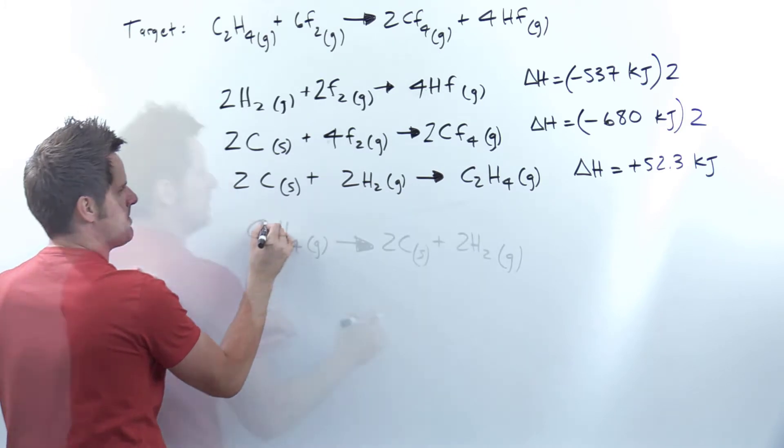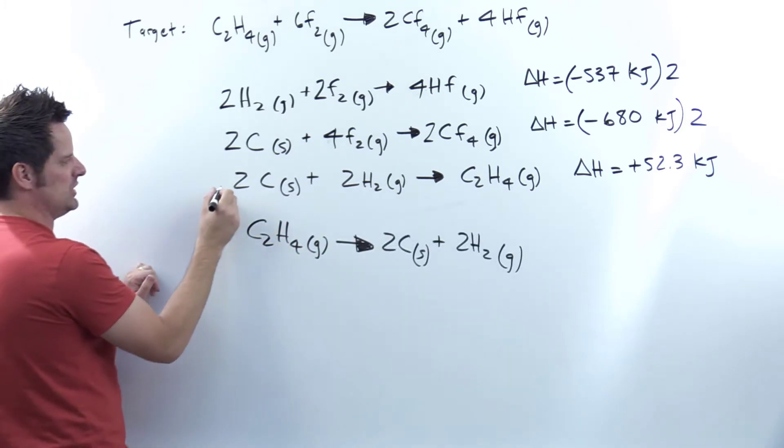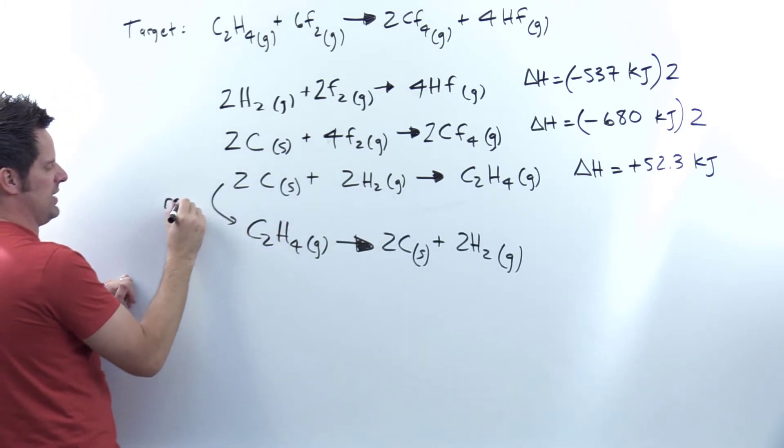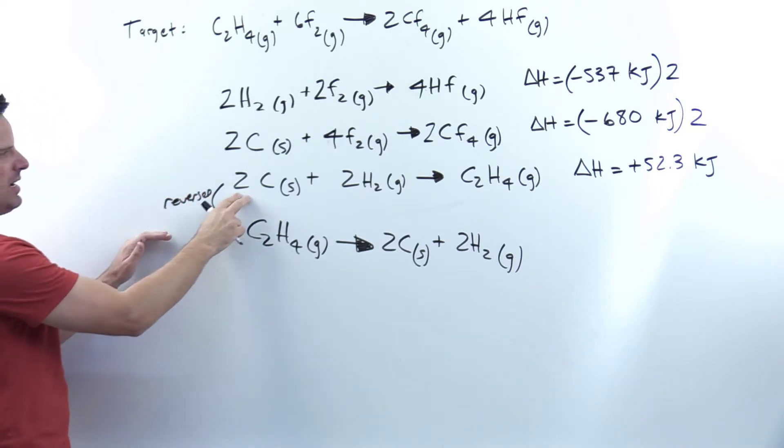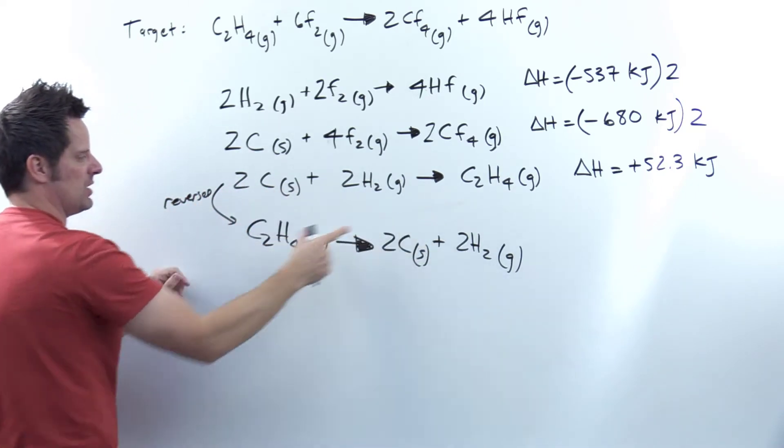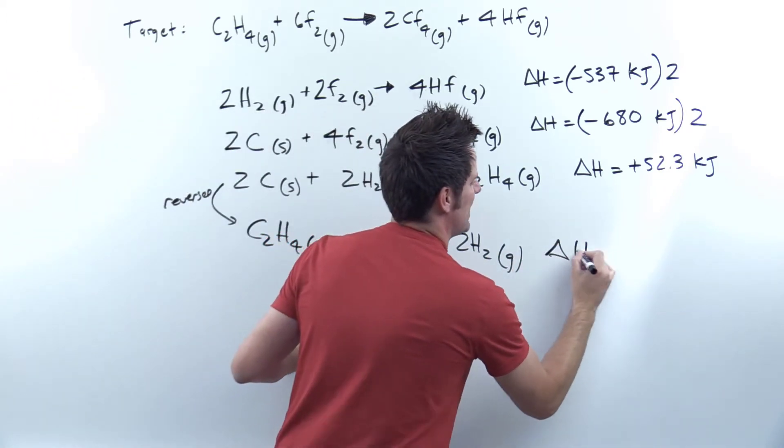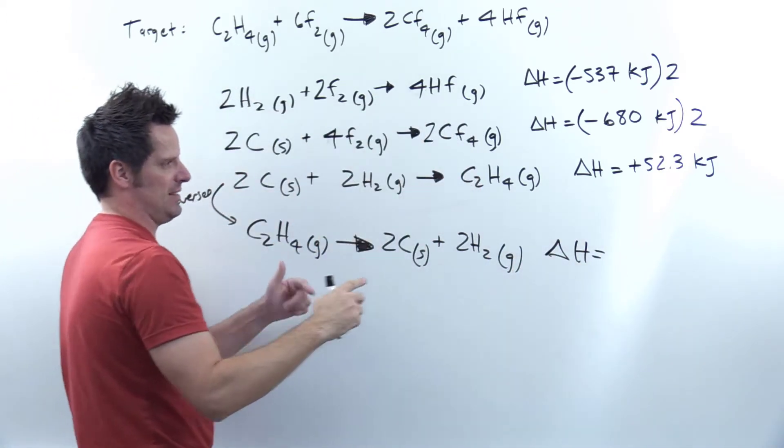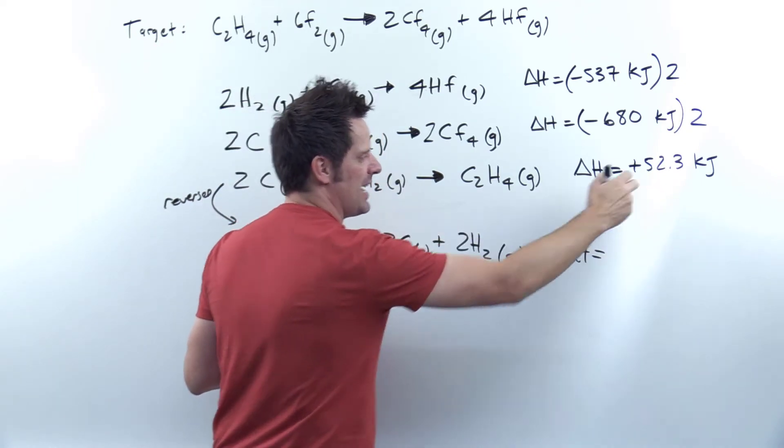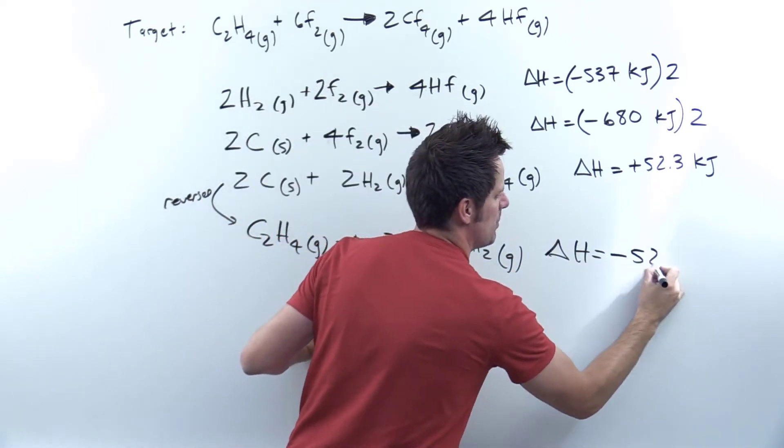And I hope you're okay making that jump. So I've taken this and I've reversed it. I switched the reactants for products, the products for reactants. Now when you reverse an equation, you have to take its delta H and just flip its sign. I had a positive 52.3, I'm now going to make it a negative 52.3.